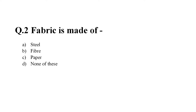Question number two: Fabric is made of — Option A: steel; Option B: fiber; Option C: paper; Option D: none of these. The right answer is Option B — fiber.